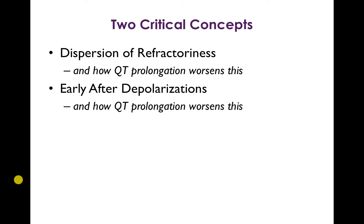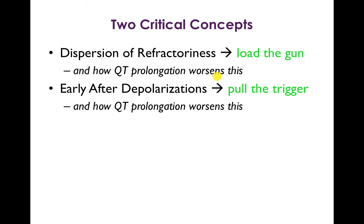To understand how Torsades de Pointes initiates, you have to understand two critical concepts. One we talked about extensively in lecture: early after depolarizations, and we'll talk about again how QT prolongation worsens this. The second main concept is dispersion of refractoriness, and it's also important to understand how QT prolongation worsens this property as well. Understanding both these two concepts together — the first of which is like loading the gun and the second of which is like pulling the trigger — will help you really understand how Torsades initiates.